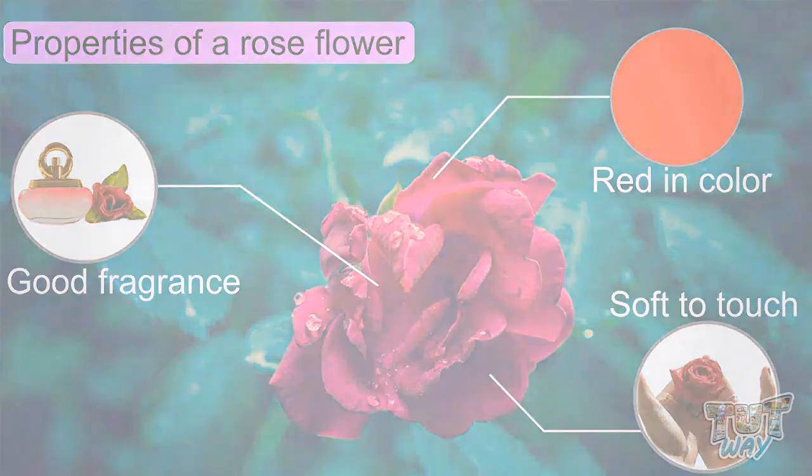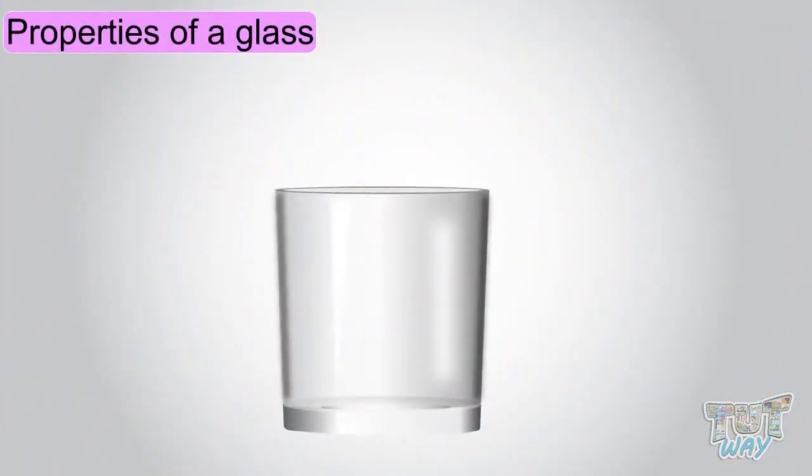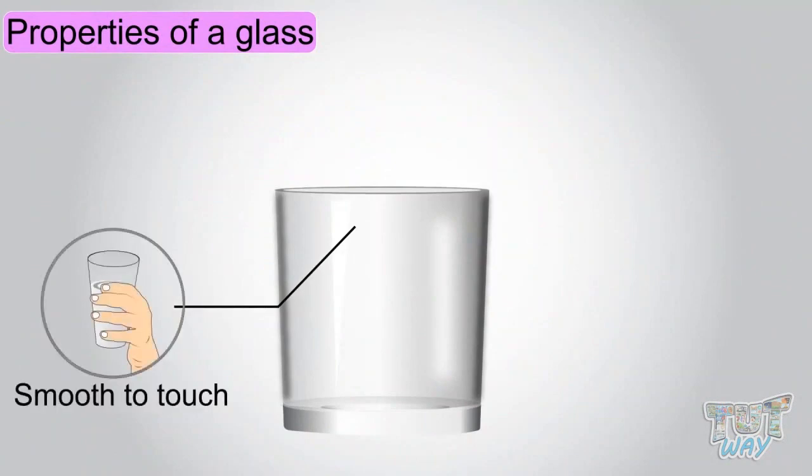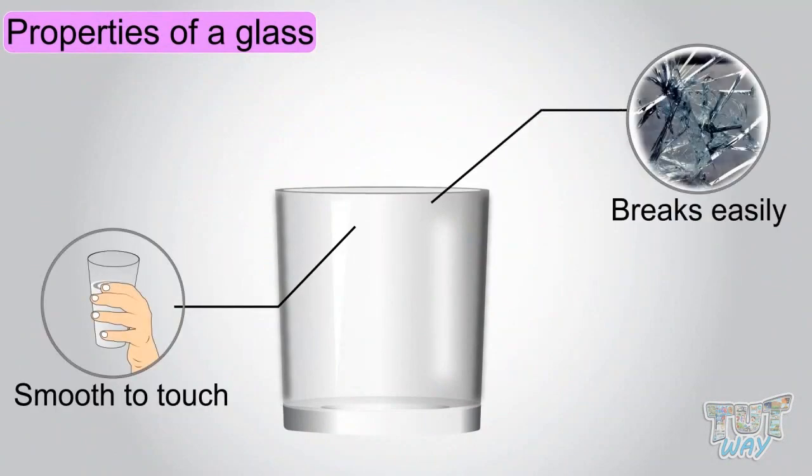Now let's see properties of a glass. Smooth to touch, breaks easily, and transparent.